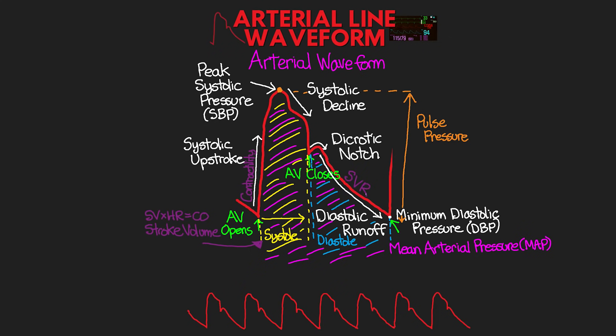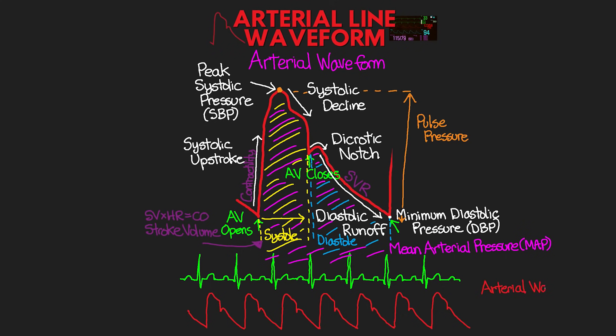That gives us a good breakdown of the different components of the arterial pressure tracing and what each of those mean. The last thing I want to discuss with this pressure tracing is the alignment with our patient's ECG. Here is a corresponding ECG tracing aligned with this pressure tracing. The thing that really stands out is that the QRS complex occurs before the systolic upstroke. As a result, the arterial pressure tracing will trail behind the ECG tracing. The reason is that the ECG is measuring the electrical impulse — the electrical activity takes place followed by corresponding muscle contraction in the heart. There is approximately a 180 millisecond delay from the R wave of our QRS complex to the start of the systolic upstroke.